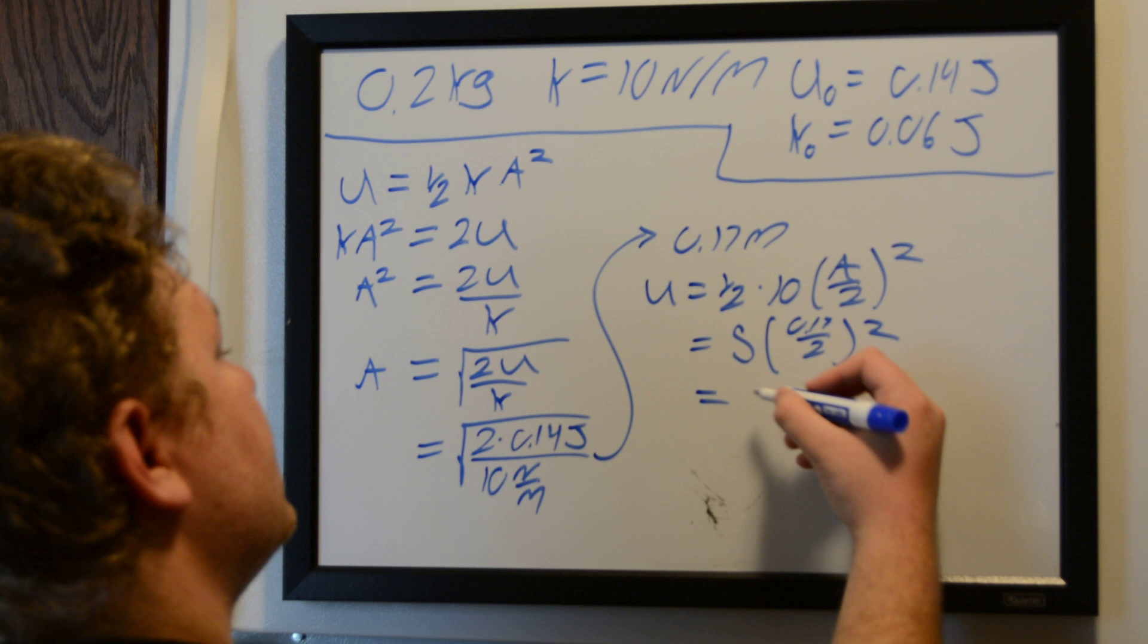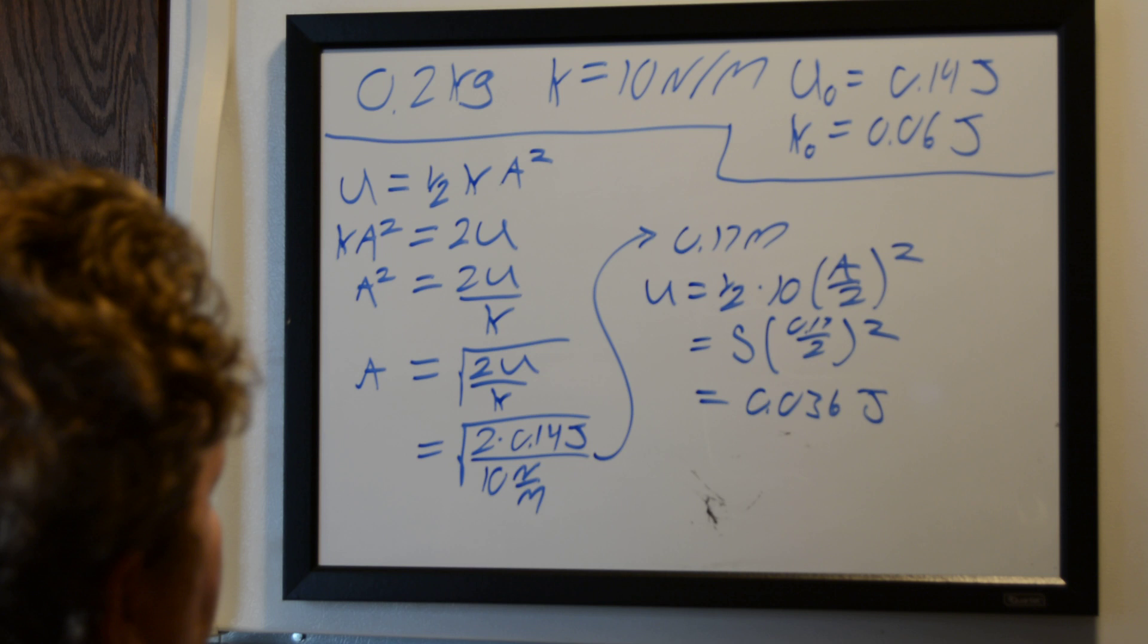which is going to be 5 times 0.17 over 2 squared, which comes out to be 0.036 joules as our potential energy at half of our amplitude for displacement.